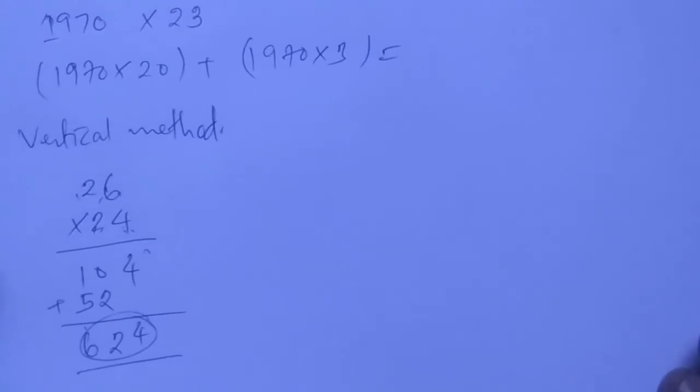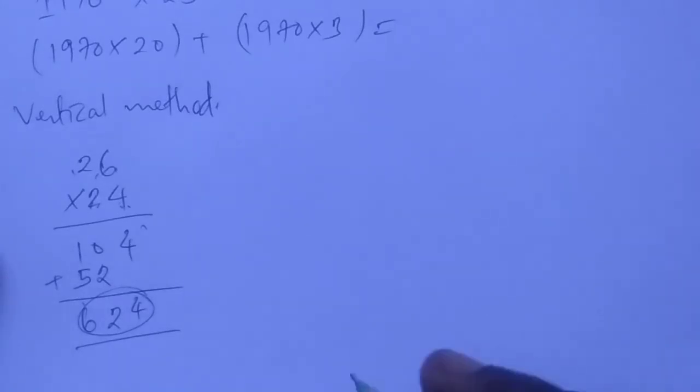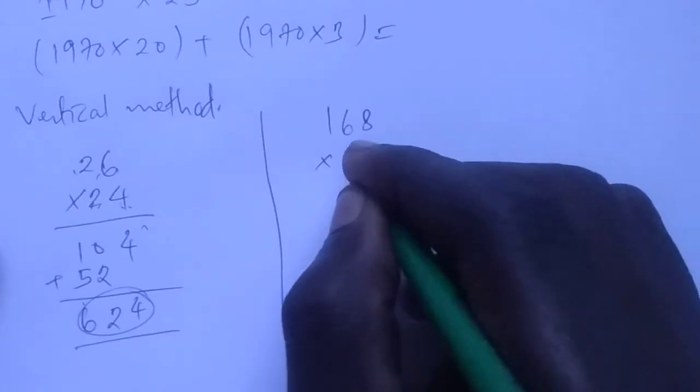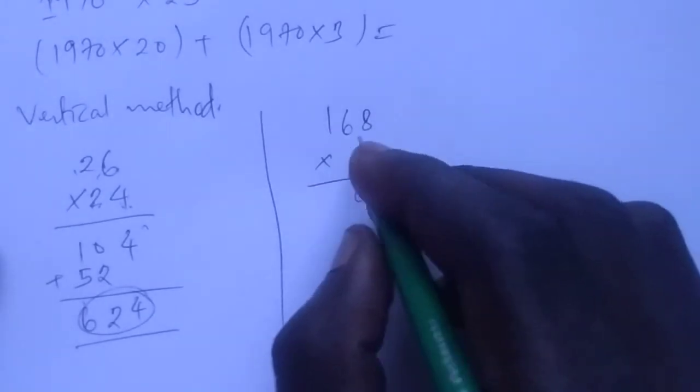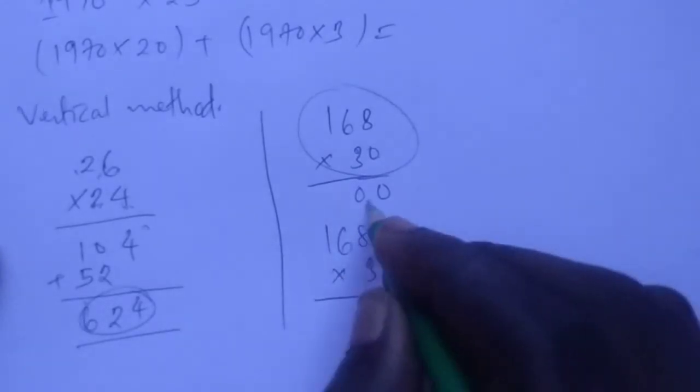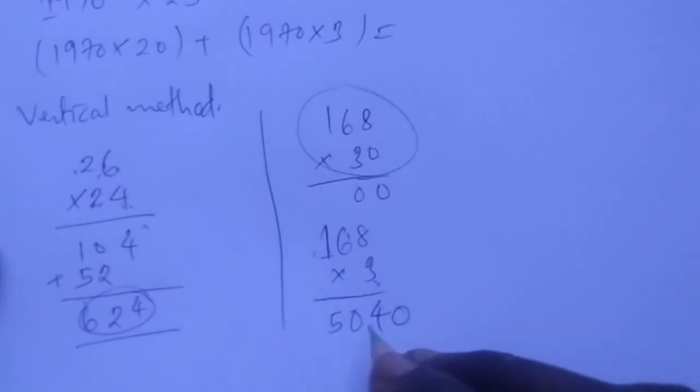This is the product of multiplication of these two numbers. I hope everyone knows about multiplication of numbers from your primary level mathematics. For example, if we have 168 times 30, then 0 times any number is 0. This is the same as 168 times 3, which gives us 24, then 18 plus 2 is 20, 3 plus 2 is 5, then we add 0 at the end to get 5040.